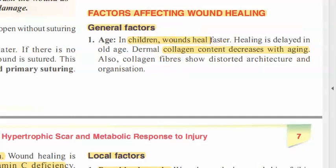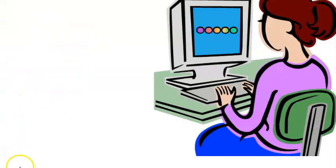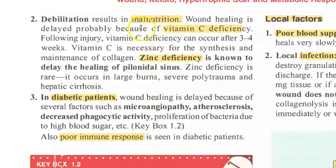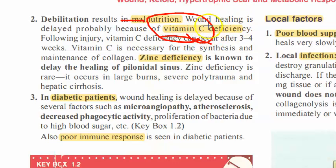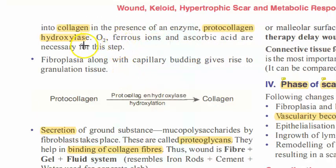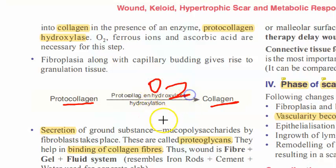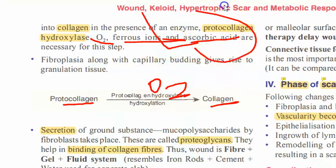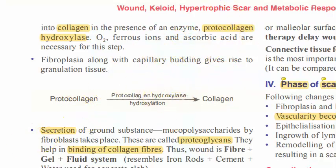In older people, collagen will not be structured properly. Other factors affecting wound healing include malnutrition — specifically Vitamin C deficiency. For procollagen to become collagen, you need procollagen hydroxylase enzyme, iron, oxygen, and ascorbic acid (Vitamin C). All these are required for wound healing.